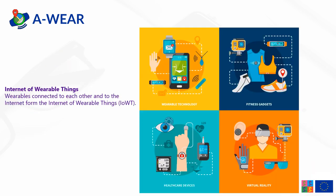Now that we know what wearables and internet of things are, internet of wearable things is basically defined as wearables connected to each other and to the internet, which forms the internet of wearable things. The wearable technology may include your personal devices and gadgets, for instance your smartphone, your smartwatch, and smart ring.